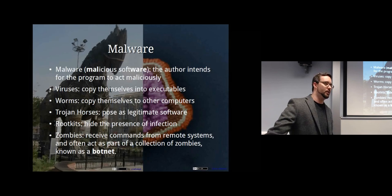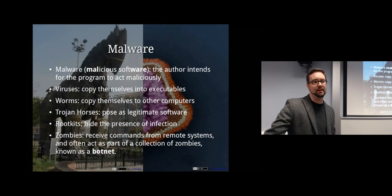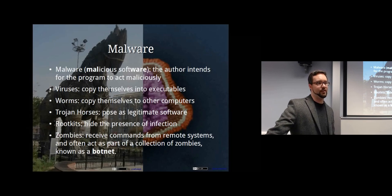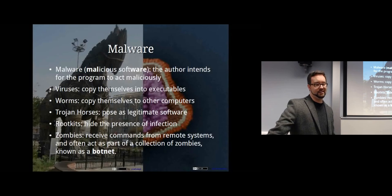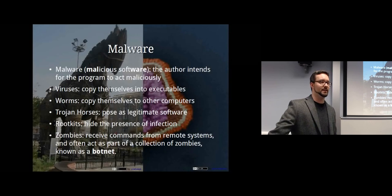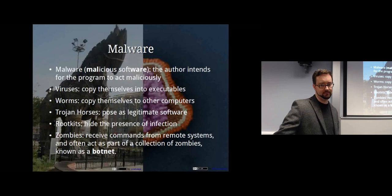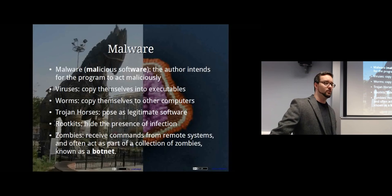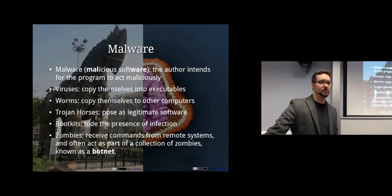There are lots of different categories of malware, and malware is generally categorized based on either how they spread or what they do. Generally, it's malicious software — the author actually wants that software they've created to do something malicious, as opposed to a software vulnerability where the author has good intentions but makes a mistake. Some categories of malware include a virus, for example, which is where a program copies itself into other programs and spreads on the same computer.